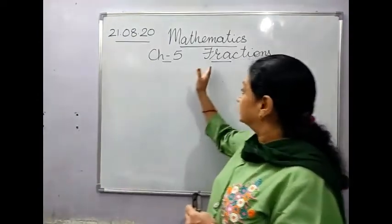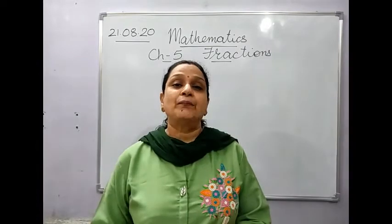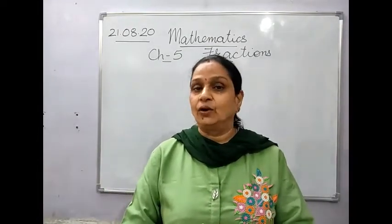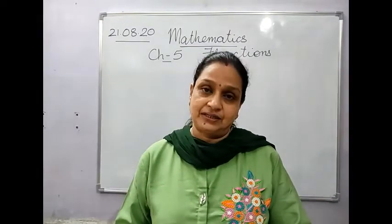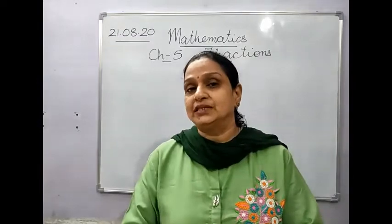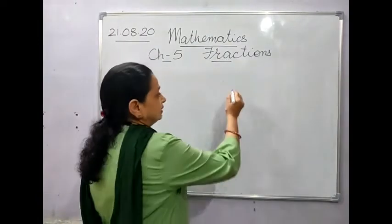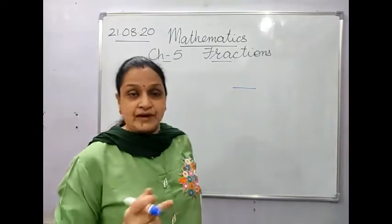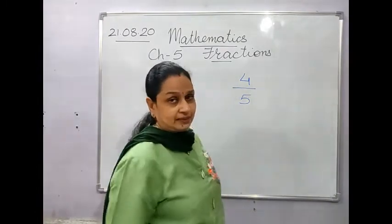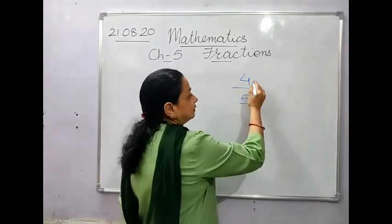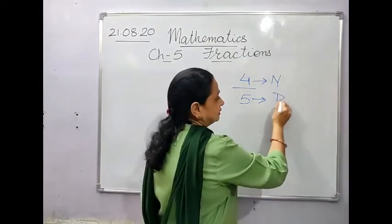Last time we studied fractions — what are fractions and how do we write them. A fraction is a part of a whole, or a part of a group or a collection, and the parts must be equal. For writing a fraction, two numbers are used. One number is written above the fraction bar and the other below it. The number above is called the numerator and the number below is called the denominator.